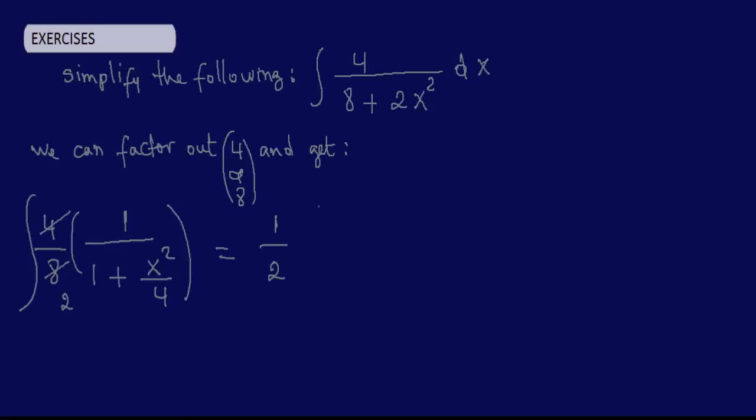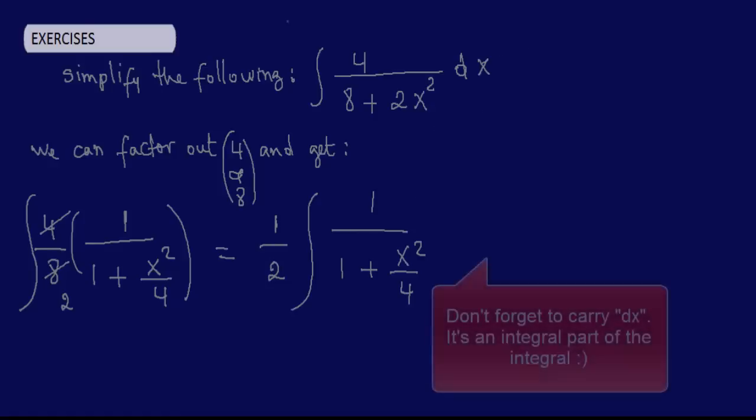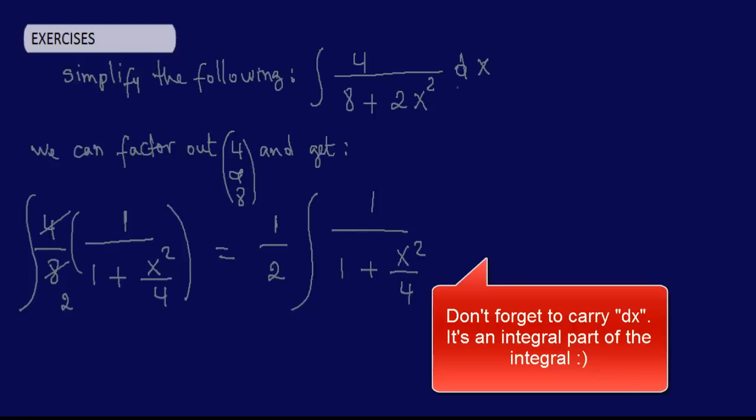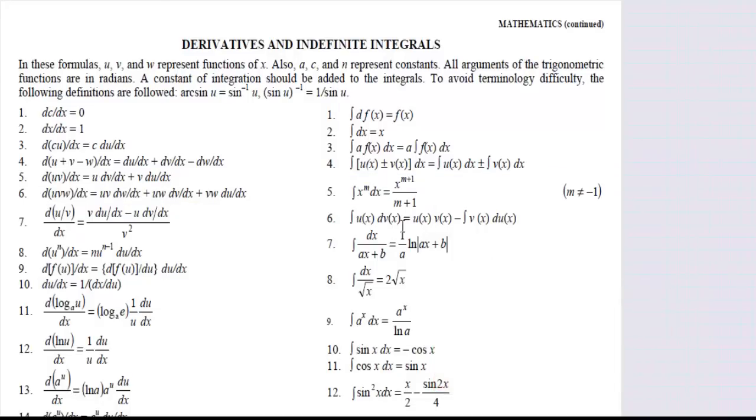So 4 over 8 is 1 half. You simplify that. So you take out the 1 half because it's a constant. It doesn't necessarily have to be a part of the integral, so you can take it out. And you're left with 1 over 1 plus x squared over 4, d of x. So now we can't simplify anymore. We have to use one of these integrals.